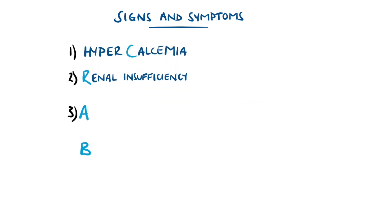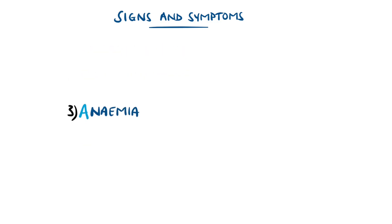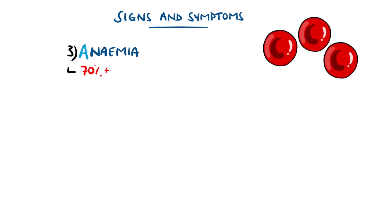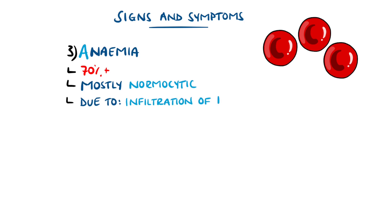A is for anemia, present in over 70% of patients, typically a normocytic anemia that occurs due to multiple factors including the infiltration of bone marrow by cancer cells.